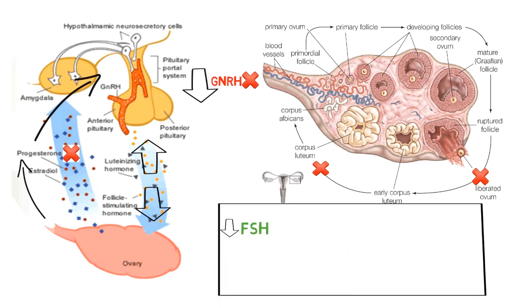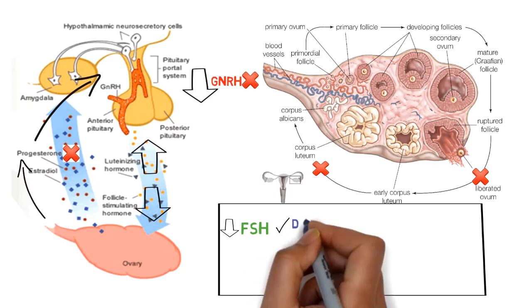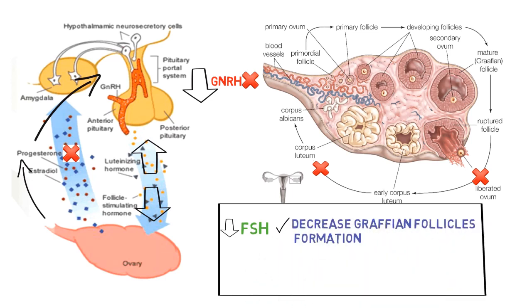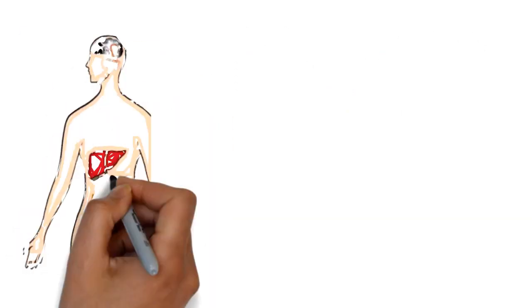This decreased FSH level results in the decreased maturation of the ovarian follicles, oligo or anovulatory cycles, and cyst formation in the ovaries.